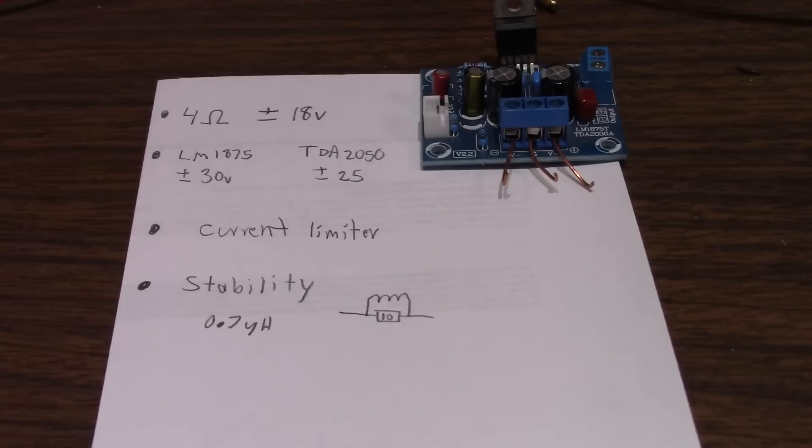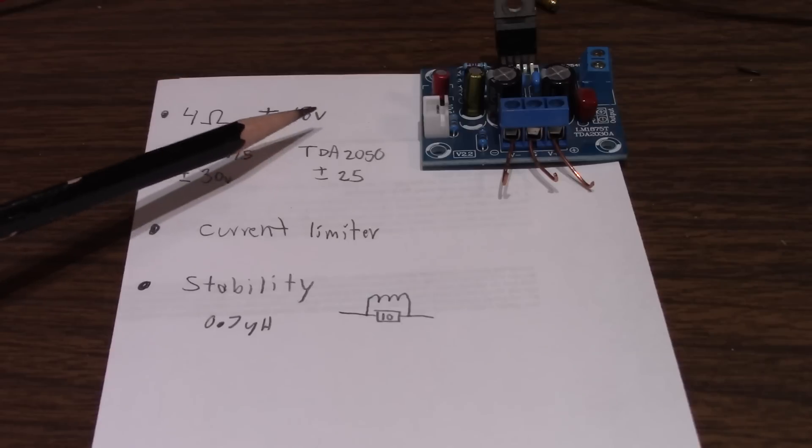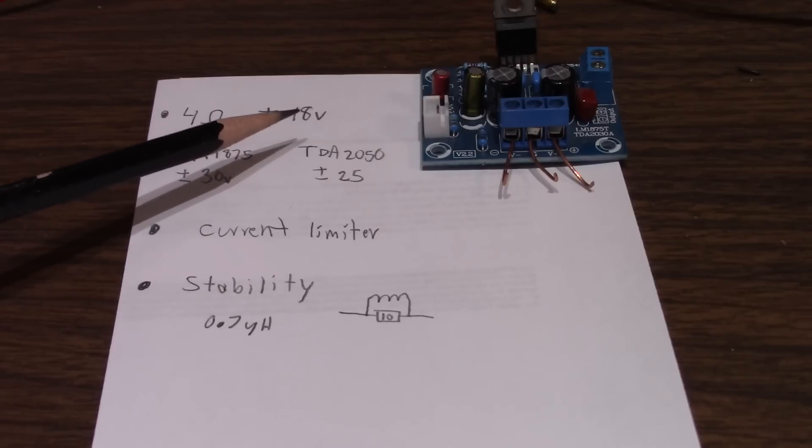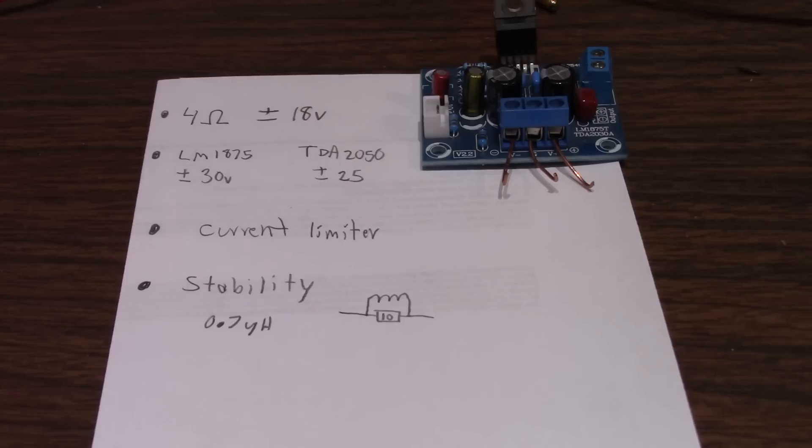The 1875 is really not meant to be used with 4 ohm loads, though if you want to keep the voltage under 18 volts plus minus 18 volt supply, that's fine. I would even say the same with the TDA2050, because at the higher voltages with the lower impedance, you're starting to push things.